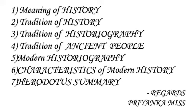In this chapter, we first see the meaning of history, then the tradition of history, followed by the tradition of historiography, the traditions of ancient people, and then modern historiography and its four characteristics. Last, we mention the summary of Herodotus. I hope you will understand. Goodbye and have a nice day. With regards, Priyanka Miss.